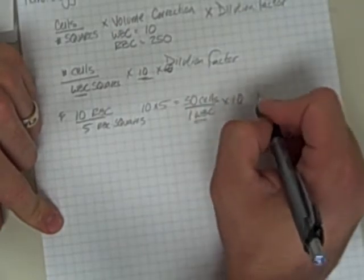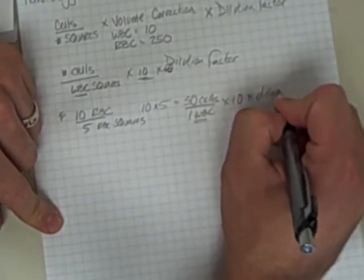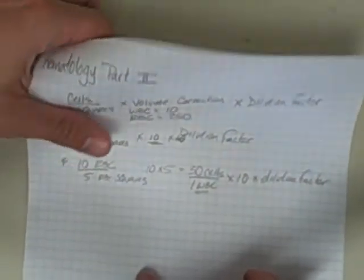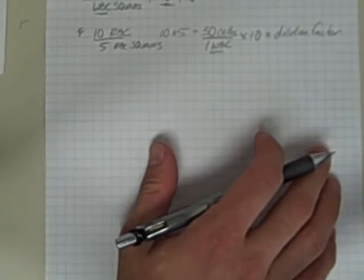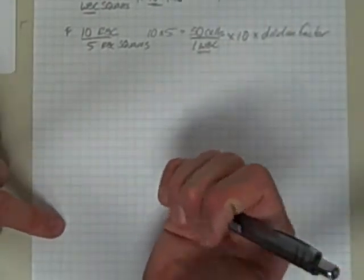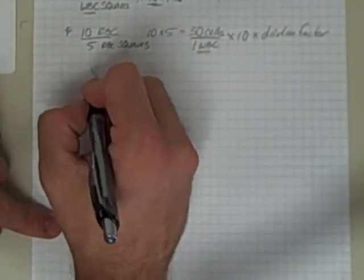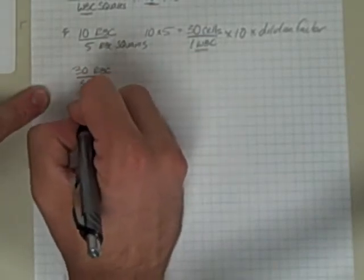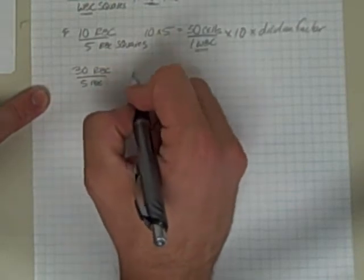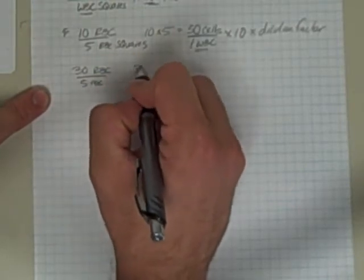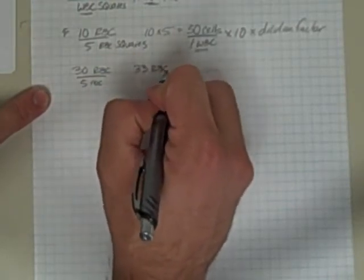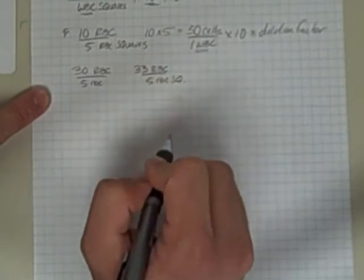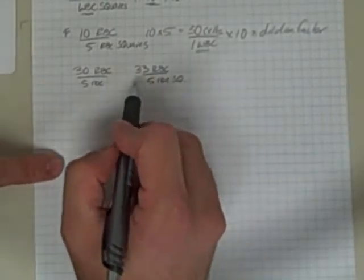So let me give you an example. So at the end of the presentation, you're told that you counted 30 red blood cells in five RBC squares on one side, and 33 RBC in five RBC squares on the other side. Well, I know that five red blood cell squares is only a fifth of that entire white cell square.